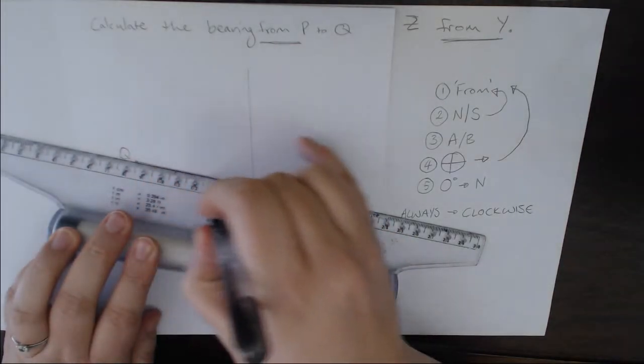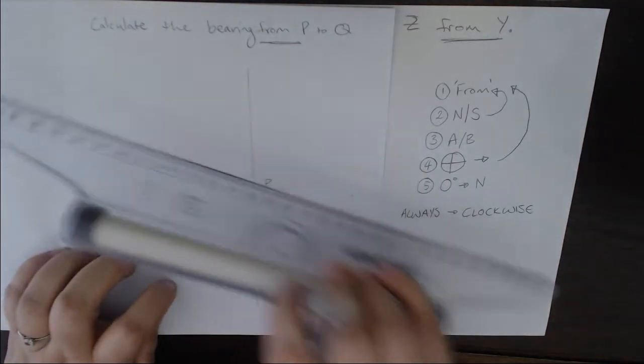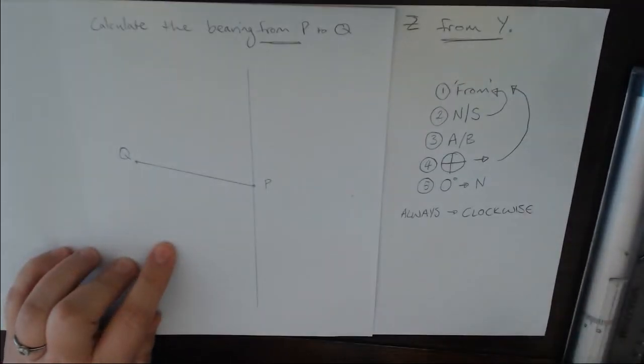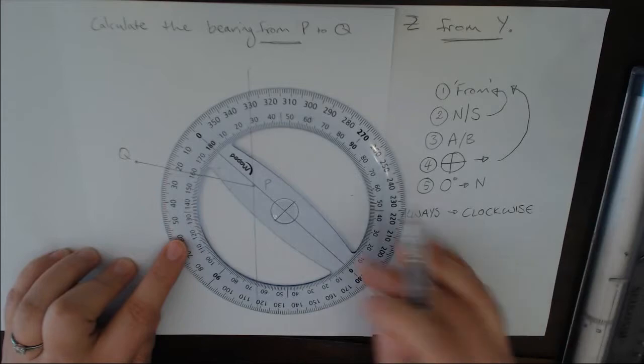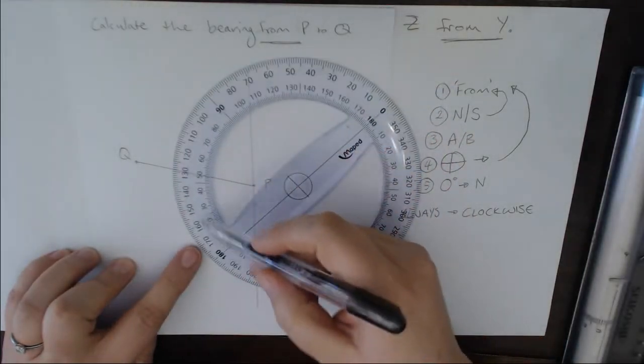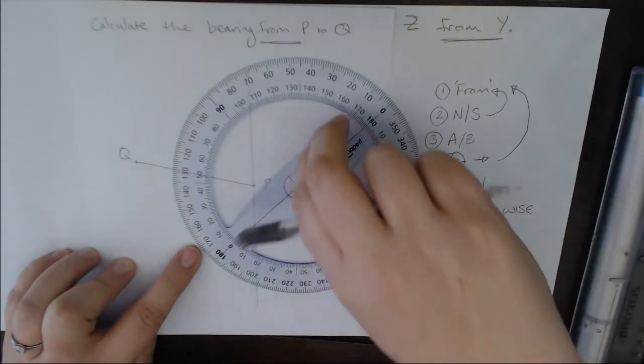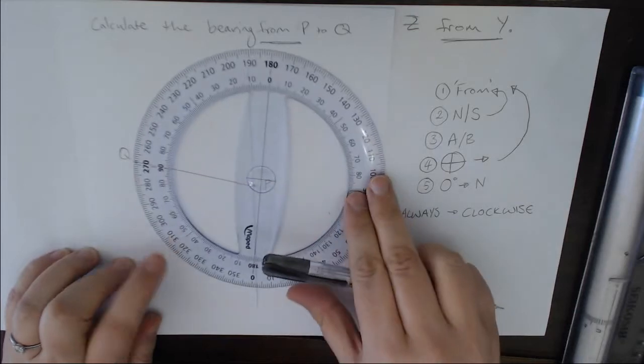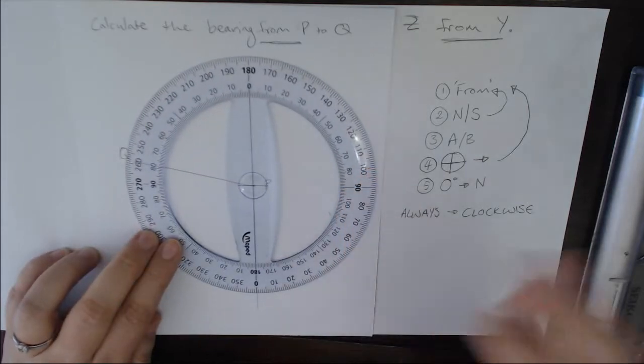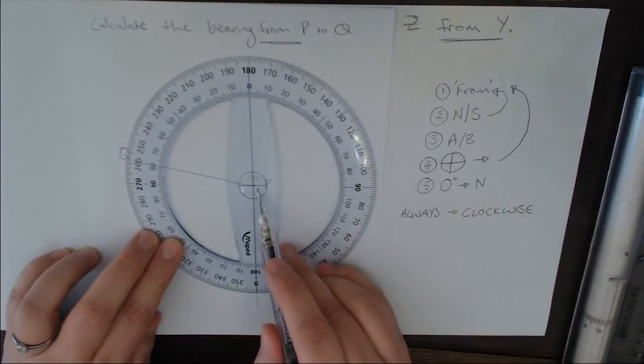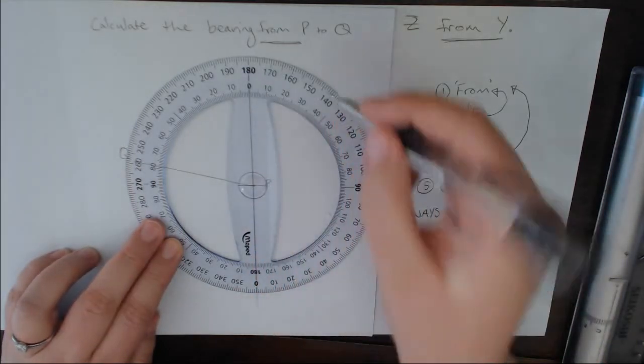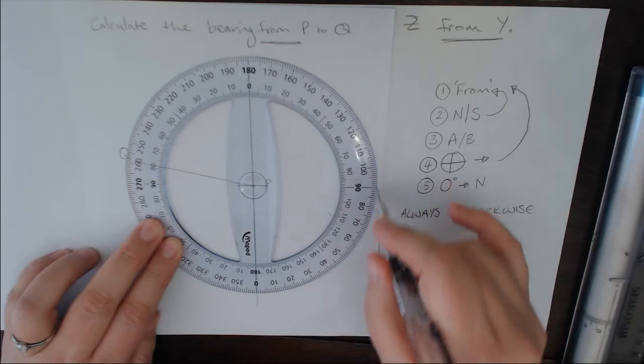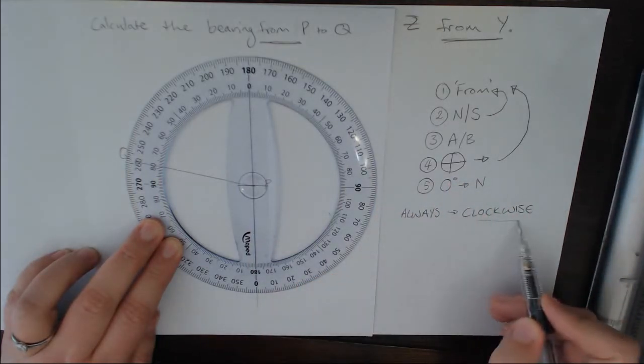So I'm going to take that protractor, make sure I have the right section from zero to 180 degrees, turn it and put that little cross onto my from point. Zero degrees is lined up with north so I'm going to go all the way around but now I've reached 180 and I have not hit my A-B line yet.